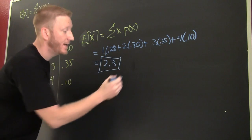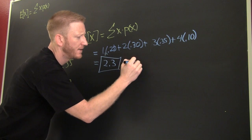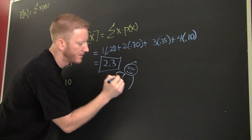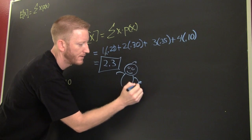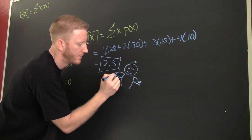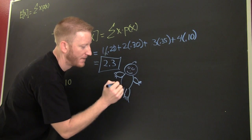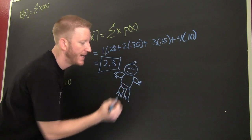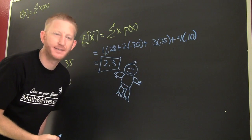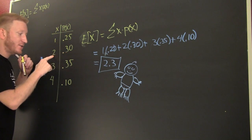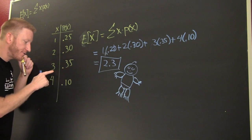Maybe it's the number of kids in a family. You had a randomly selected family, and there's a 25% chance that you have one kid, a 30% chance that you have two kids.